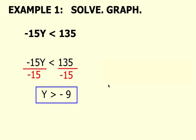So here's what the graph will look like. Since this is a greater than symbol, you're going to use an open circle on negative 9 because negative 9 is not part of the solution set. You're going to shade towards the right because that represents the numbers that are greater than negative 9.